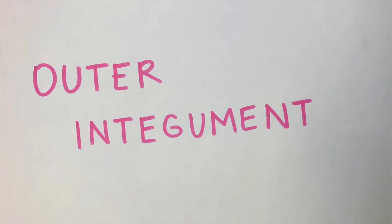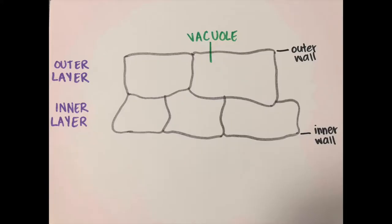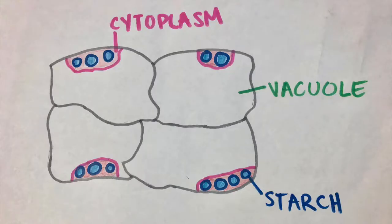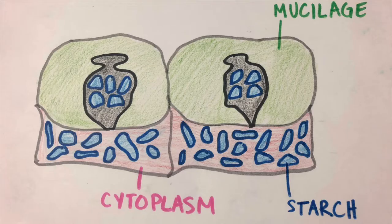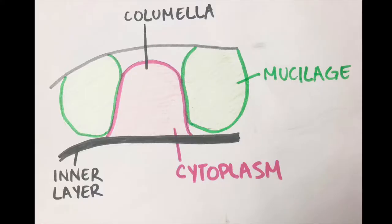What about the outer integument? The outer integument consists of an outer cell layer and an inner cell layer. To start off, the cells in both layers have large vacuoles that consume most of the space inside the cells. Starch-containing amyloplasts begin to accumulate in both cell layers. Then the mucilage starts to secrete around the starch, forcing the protoplast to assume a columella shape. The vacuoles disappear and the starch begins to disappear as well. The inner layer gets compressed against the outer layer and appears as a thick inner wall of the outer layer. Now the outer layer consists only of the columella and the mucilage.